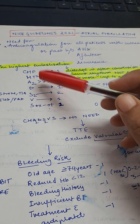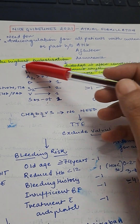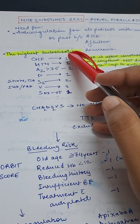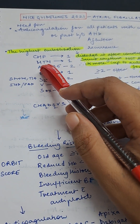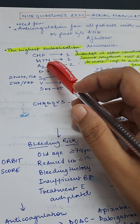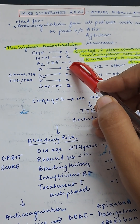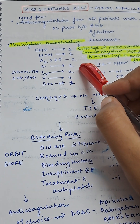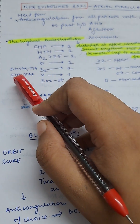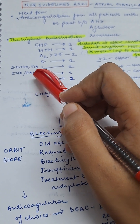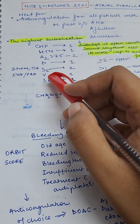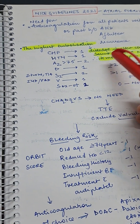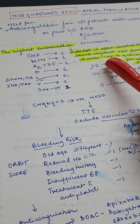For anticoagulation assessment, we use the CHA2DS2-VASc score. Congestive heart failure and hypertension each score one point. Age over 75 scores two points. Diabetes scores one point. Stroke or TIA scores two points. Vascular diseases such as ischemic heart disease or peripheral arterial disease score one point.